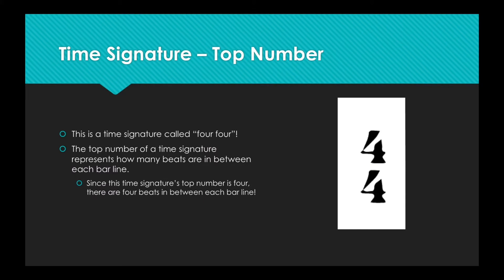That is called a time signature. In particular, this is a time signature we call 4-4. To find out what a time signature does, we have to look at the top and bottom number on their own. Let's look at the top number first. The top number of a time signature represents how many beats there are in between each bar line. For example, since this time signature's top number is 4, that means there are 4 beats in between each bar line.